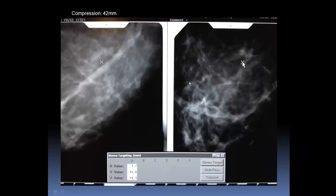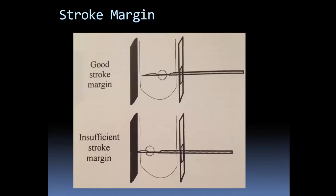A good stroke margin means when the needle fires, the lesion is in the trough and the needle stays within the breast. An insufficient stroke margin means the needle exits through the other side of the breast — this won't kill the patient, but causes significant pain and creates an additional site that needs to heal.